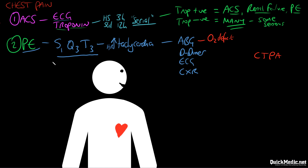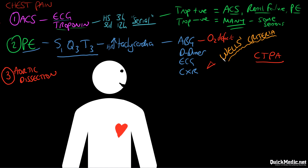If considering an ECG for PE, you would look for an S1Q3T3 pattern and tachycardia. If doing a chest x-ray and it's a bad PE, you can sometimes see wedge-shaped infarcts on the chest x-ray. You would also talk about considering a CTPA in line with your Wells criteria. The third and final major consideration to build into your chest pain diagnosis protocol is aortic dissection, and the key take-home message from literature is that unless you actively keep this in mind when assessing every chest pain patient, you're not going to diagnose it in time to save the patient's life.